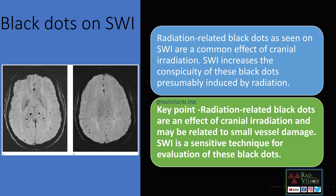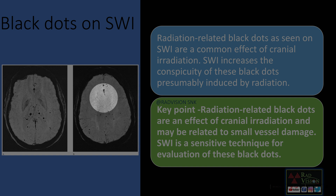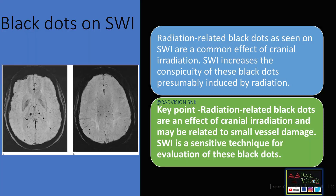Next, what are black dots on SWI? Black dots on SWI are classically seen as multiple punctate dots on SWI images, typically in post-radiation injury patients, which are due to small vessel ischemia or small vessel damage. SWI is a sensitive sequence for diagnosing black dots, especially in radiation-induced or post-radiation cases.